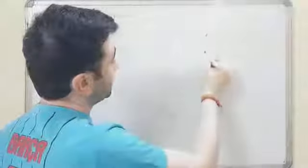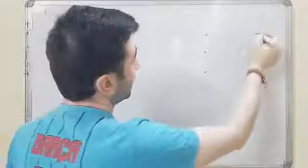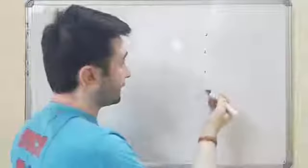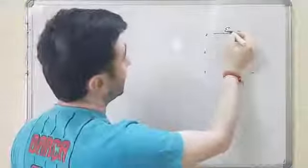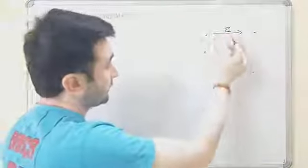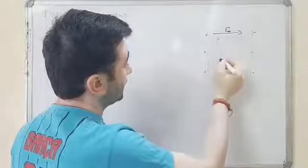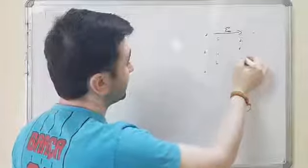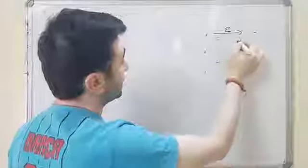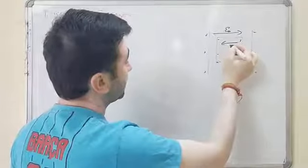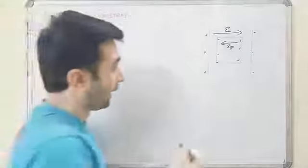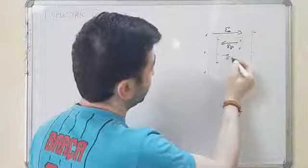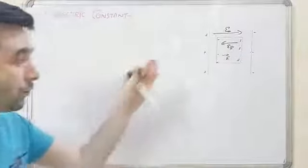Here we have parallel plates having positive and negative surface charge density. The applied electric field is E₀, and the induced surface charge density produces the induced electric field. The total effect gives us the net electric field E in the dielectric.